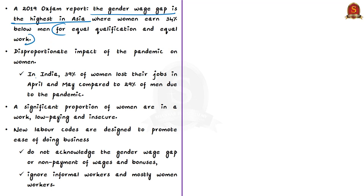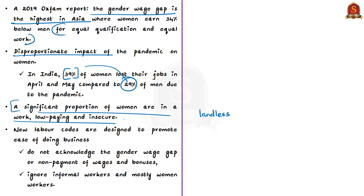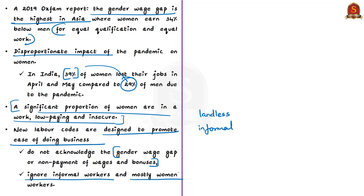The author also talks about the disproportionate impact of COVID-19 on women: 39% of women lost their jobs in April and May compared to 29% of men. The bulk of women labourers in agriculture are landless labourers, and the manufacturing sector employs only around 14% of the female labour force. These women are employed almost completely informally, meaning they are not protected in terms of social security, insurance, provident fund or maternity benefits. Regarding labour courts, the author's opinion is that courts are designed to promote ease of doing business but do not acknowledge the gender wage gap, non-payment of wages and bonuses, and mostly ignore informal and women workers.